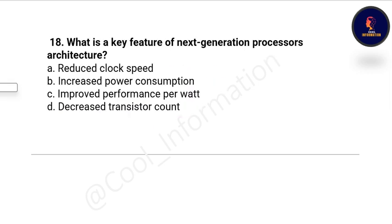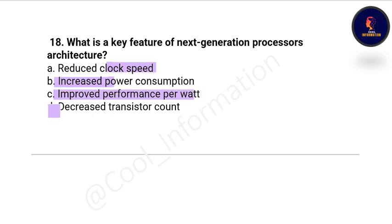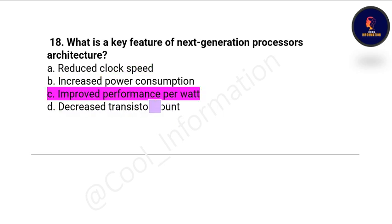Question 18: What is the key feature of next-generation processor architecture? Option A: reduced clock speed, Option B: increased power consumption, Option C: improved performance per watt, Option D: decreased transistor count. The correct option is improved performance per watt.